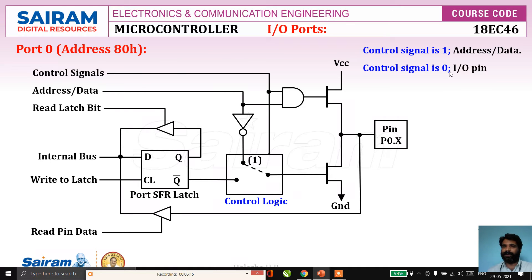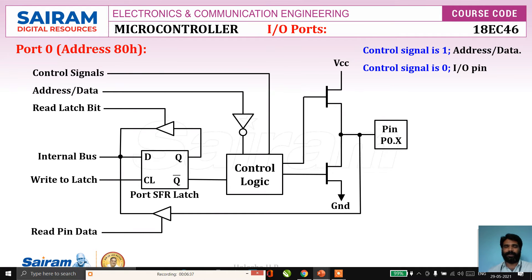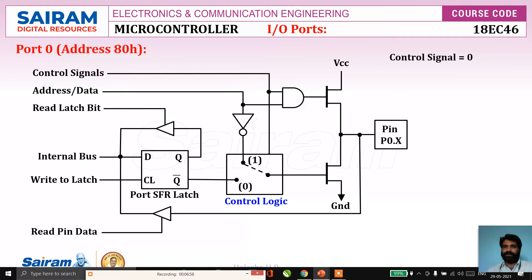When the control signal is zero, the pin behaves as an IO pin. In that case, the output of the control logic is driven by the complemented output of the latch, connected to the gate of the lower FET. So: control signal = 1 means address/data mode; control signal = 0 means IO mode. In IO mode, when control signal is zero, the upper FET is off, and the AND gate output is zero regardless of other inputs.